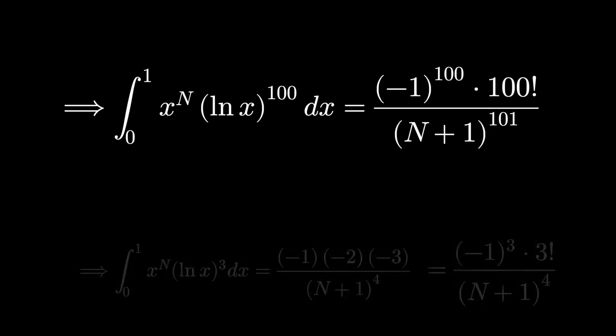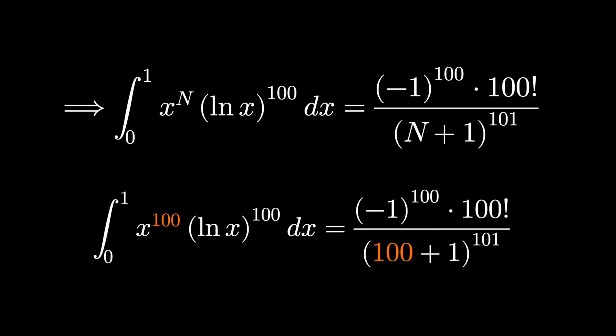And now we have a function that gives us this integral for whatever power of x we'd like. In particular, we wanted x's power to be 100. So let's just substitute 100, we'll have the integral we're interested in, and we get the result as well.